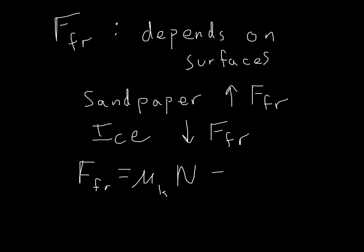So this is the way your book writes it. I would likely write it mu k times Fn, so that I don't confuse the n with newtons. In this equation, mu k has a very specific definition.